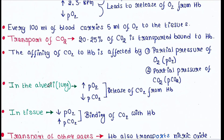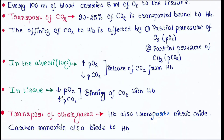In the alveoli, the partial pressure of oxygen is always high and the partial pressure of CO2 is always low, which causes the release of CO2 from hemoglobin. In tissues, the partial pressure of oxygen is low and the partial pressure of CO2 is always high, which causes the binding of CO2 with hemoglobin.